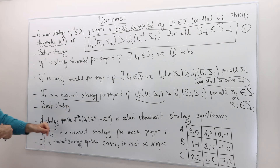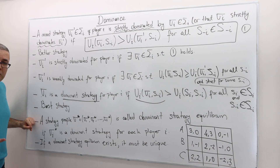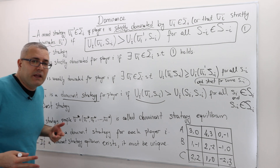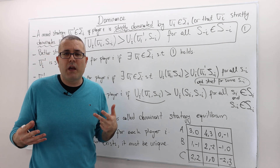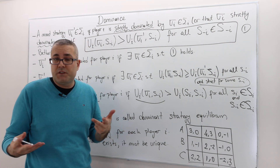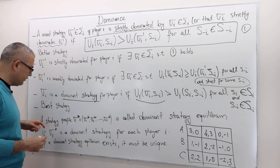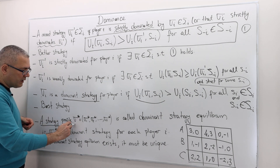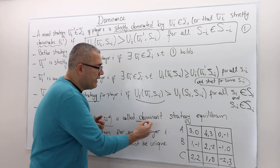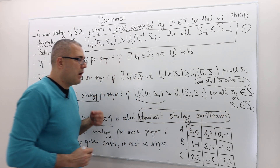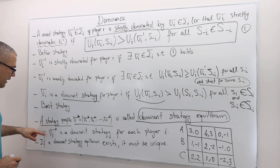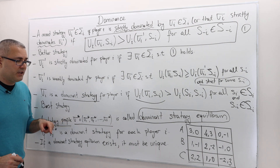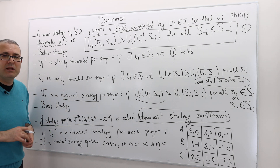If a player has a best strategy, why wouldn't they play it? So this is the very intuitive and very strong solution concept we have. A strategy profile sigma_star is called a dominant strategy equilibrium if every strategy of every player is a dominant strategy for that player. As simple as that.